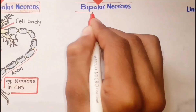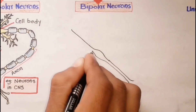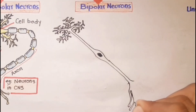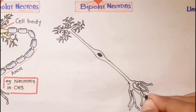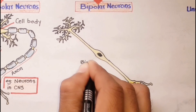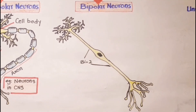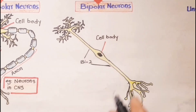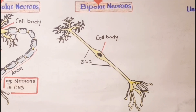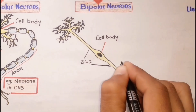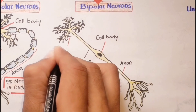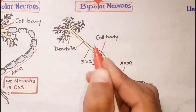The next type is bipolar neurons — 'bi' means two. As shown in the drawing, bipolar neurons have only two processes, one arising from each end of the cell body. These processes are structurally similar, but one is an axon and the other is a dendrite.